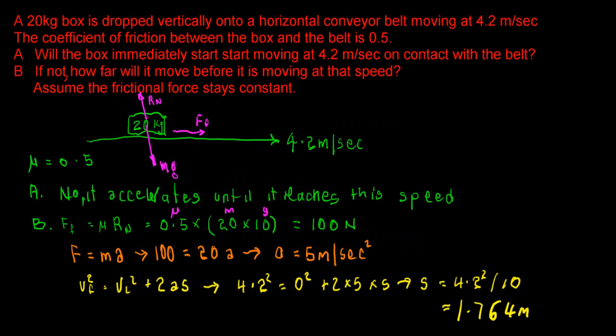A 20kg box is dropped vertically onto a horizontal conveyor belt moving at 4.2 metres per second. The coefficient of friction between the box and the belt is 0.5. Remember, a coefficient of friction is dimensionless.